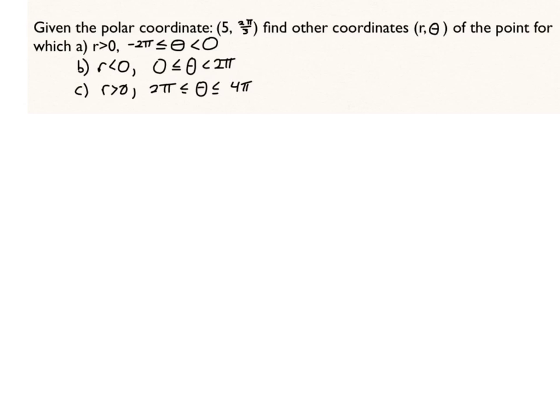Okay, I wanted to give you guys an example where you're given a polar coordinate 5, 2π over 3, and you have to find the points based on the criteria in A, B, and C.